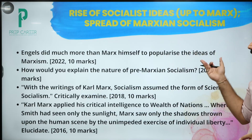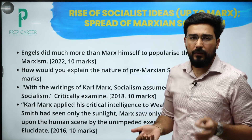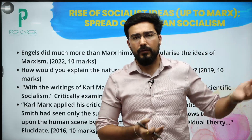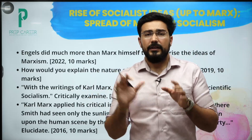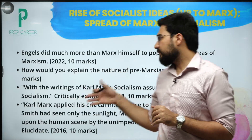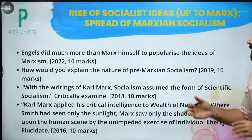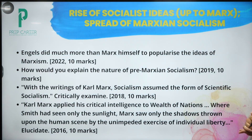How would you explain the nature of pre-Marxian socialism — that is utopian socialism. The word utopia comes from a famous novel where everybody is happy, and that is why this first phase of socialism eventually came to be known as utopian socialism. How Karl Marx's socialism or scientific socialism was different from utopian — a question on that has come twice.